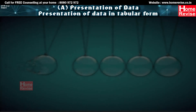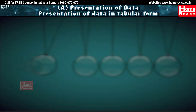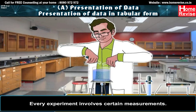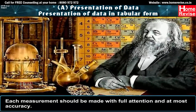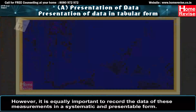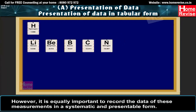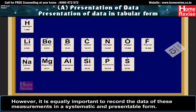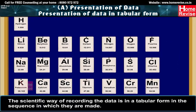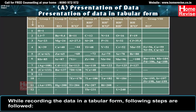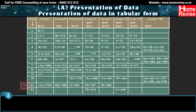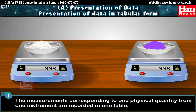Presentation of data in tabular form. Every experiment involves certain measurements. Each measurement should be made with full attention and utmost accuracy. However, it is equally important to record the data of these measurements in a systematic and presentable form. The scientific way of recording data is in a tabular form, in the sequence in which they are made. Measurements corresponding to one physical quantity from one instrument are recorded in one table.